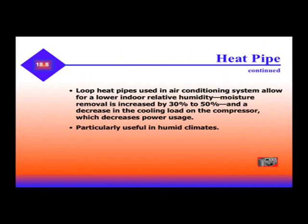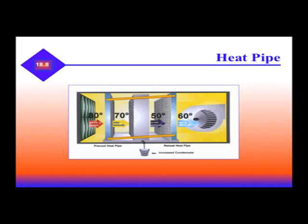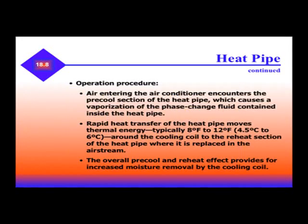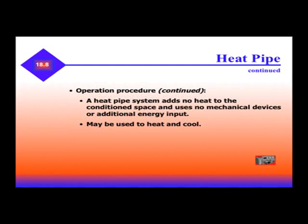Remember, in air conditioning, one of the highest uses of power is the removal of humidity, and the heat pipe is particularly useful in very humid climates. Air enters the air conditioning and encounters a pre-cooled section of the heat pipe, which causes vaporization of the phase change fluid contained inside the heat pipe. Rapid heat transfer moves thermal energy about 8 to 12 degrees around the cooling coil to the reheat section of the heat pipe, which is replaced in the airstream. The overall pre-cool and reheat effect provides for increased moisture removal by the cooling unit. A heat pipe system adds no heat to the conditioned space and uses no mechanical devices or additional energy input.